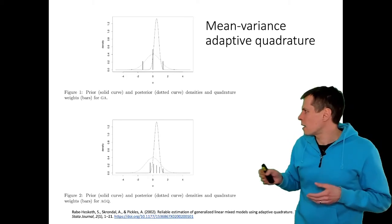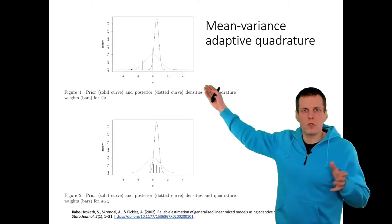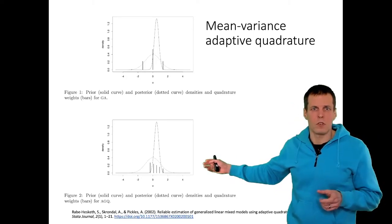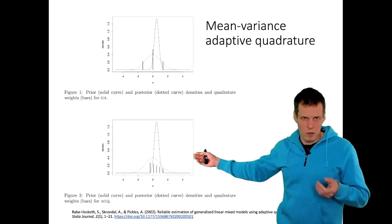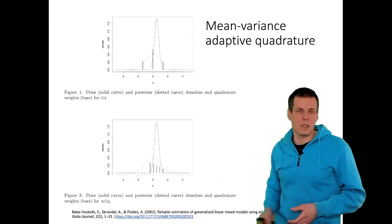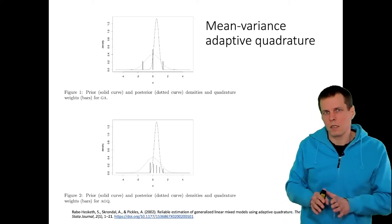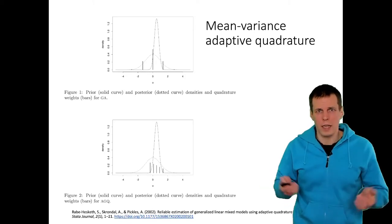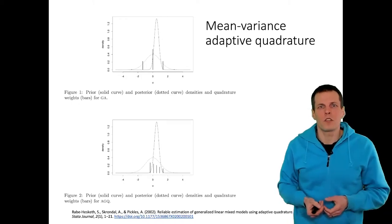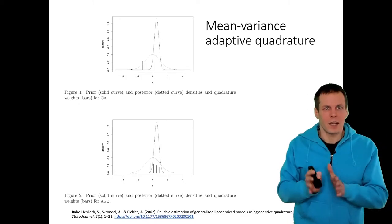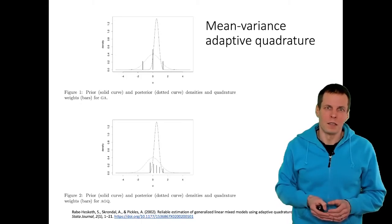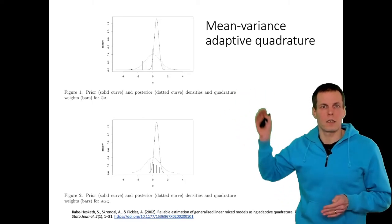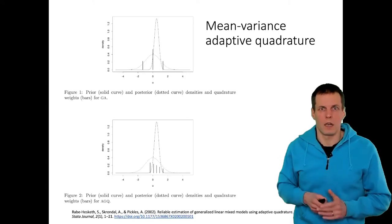What we do then is use adaptive quadrature. Instead of using the prior distribution to determine weights and abscissas, we look at the posterior distribution — estimate its mean and standard deviation — and choose the weights and abscissas based on the posterior mean and variance rather than the prior. This is the mean-variance adaptive quadrature, which is the default in Stata and many other statistical software. Quadrature is used extensively throughout Stata.